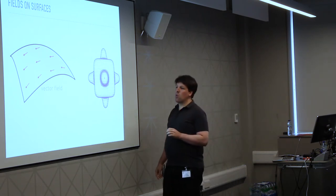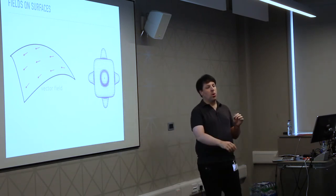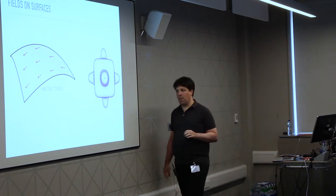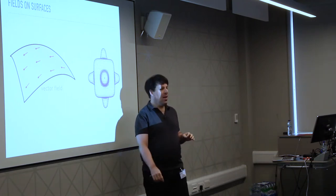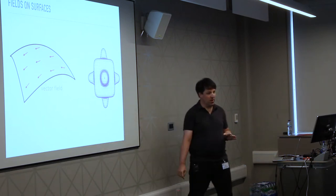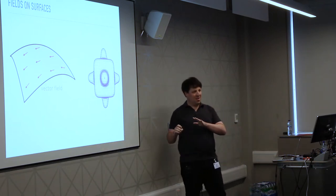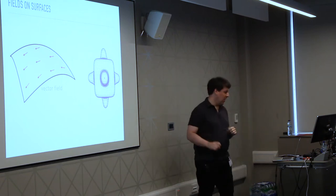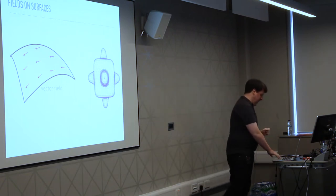Throughout this tutorial, we always talk about tangent vector fields, which means every point has a tangent plane and the vector field is within that tangent plane — there are no normal components. Usually people omit the word 'tangent' and just mean that when they say 'vector field', although it's not always the case.